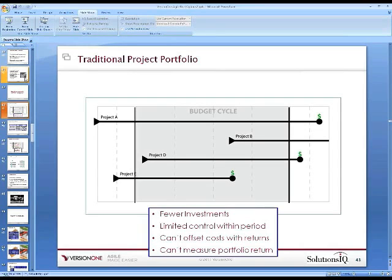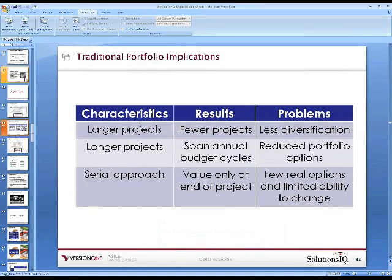The result: I've got larger projects, which means fewer projects, which by definition means less diversification. In a day where things are changing so much, you want to maintain your options and increase diversification. I've got longer projects spanning annual budget cycles — in a world where people are changing jobs frequently, people often won't even accept responsibility for projects already in play. And this concept of delivering all the value at the end from a serial perspective limits options and limits the ability to change.